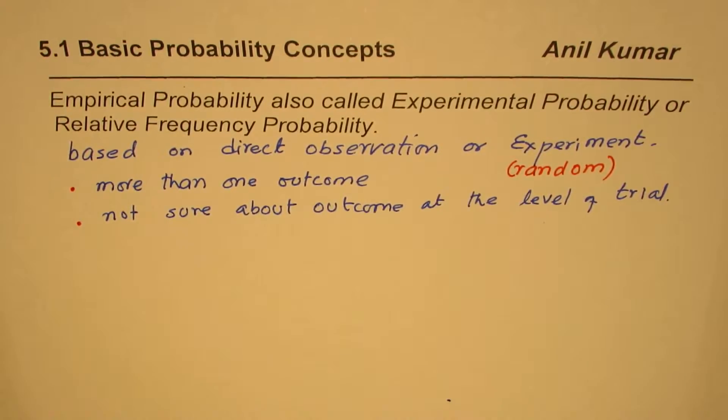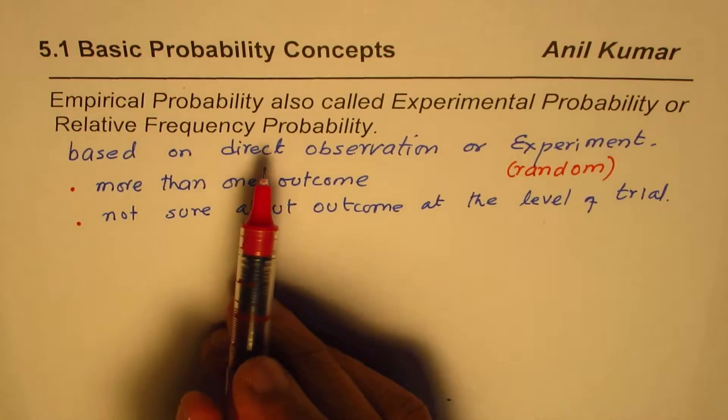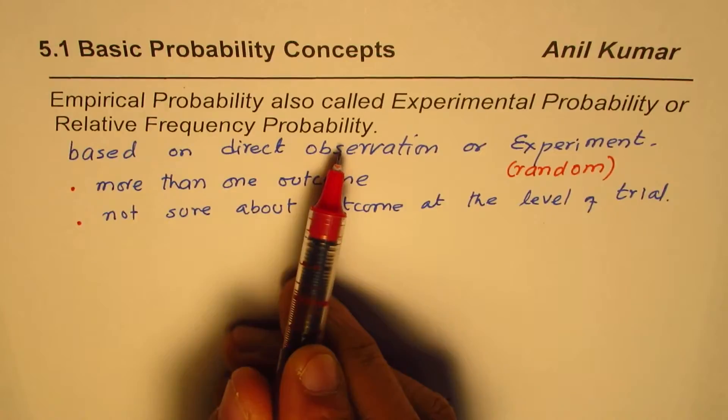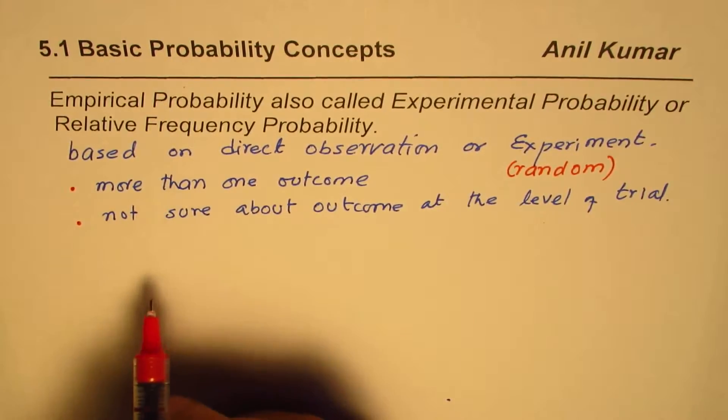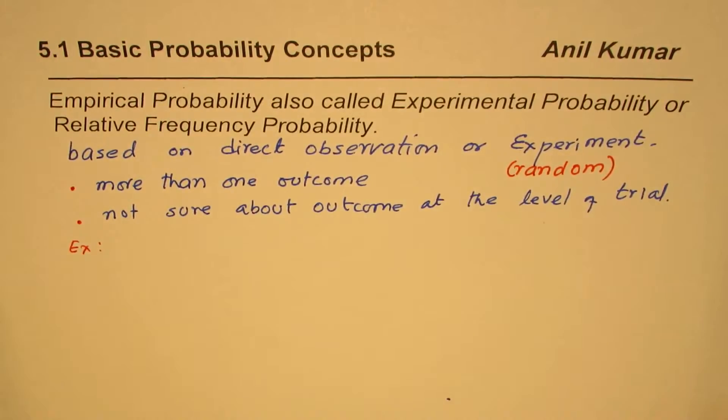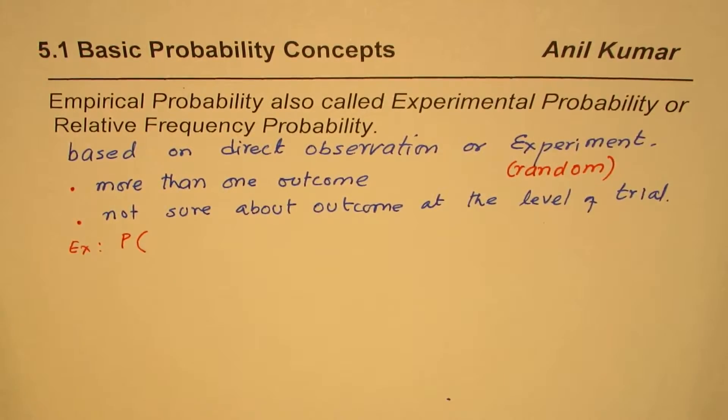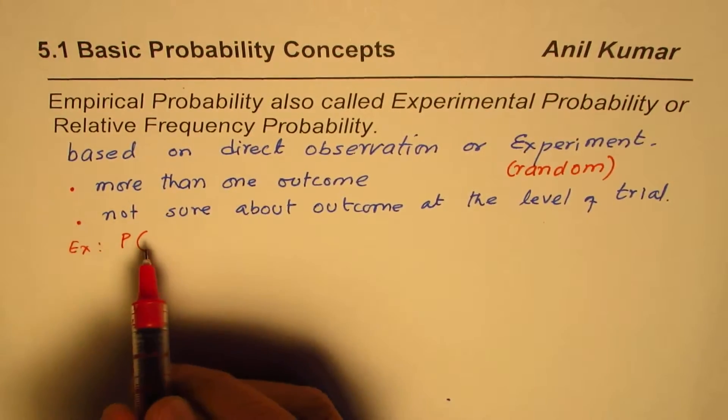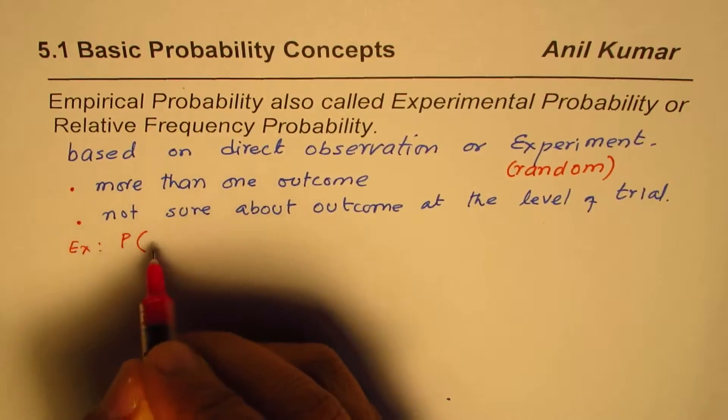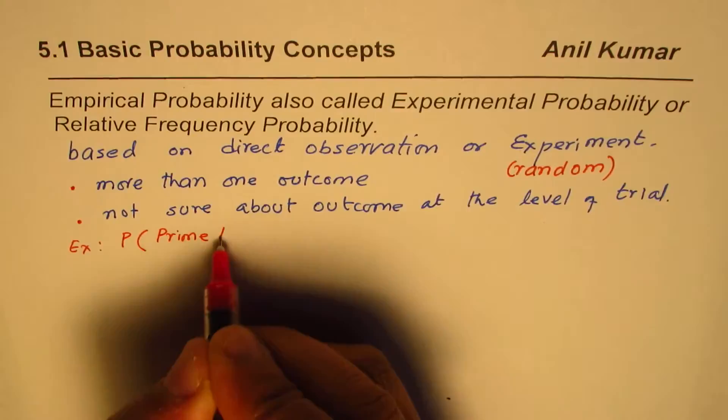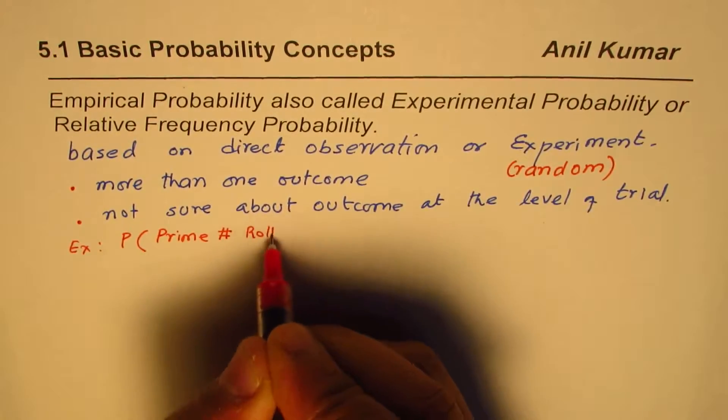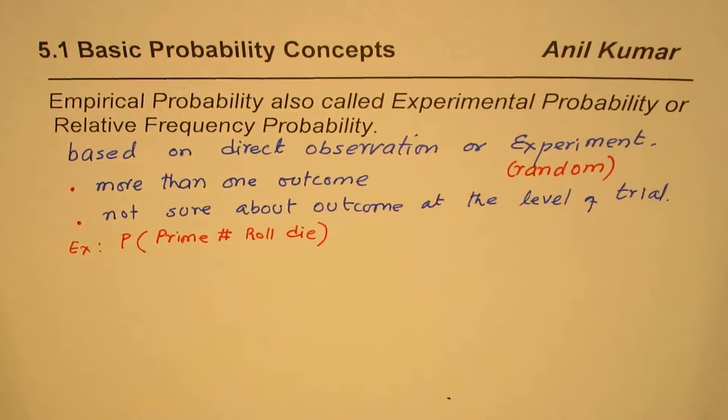Now you will find that experimental probability is normally very different from theoretical or subjective probability. Let us take an example. The example could be, let's say we started with these dice. We will take just one to make it very simple. Let us say we want to find probability. We write probability and we will define an event. So event is what we are looking as set of outcomes to be. So let the event be when you throw the die, we are looking for prime numbers.